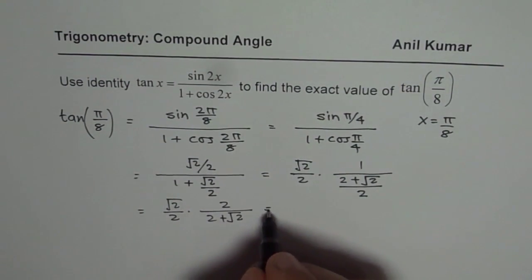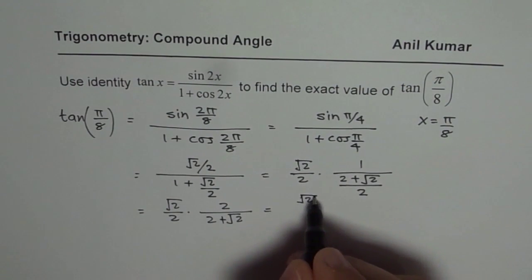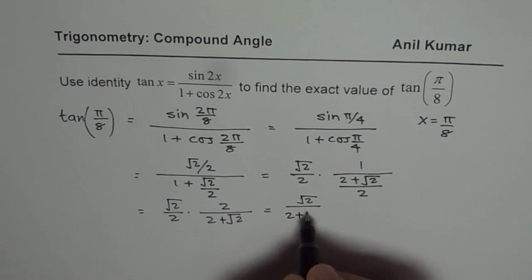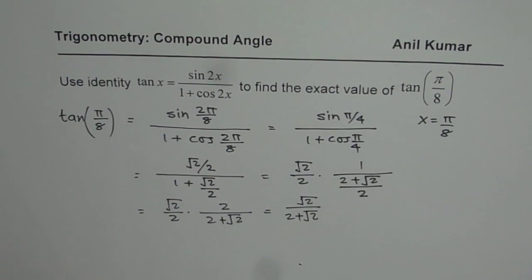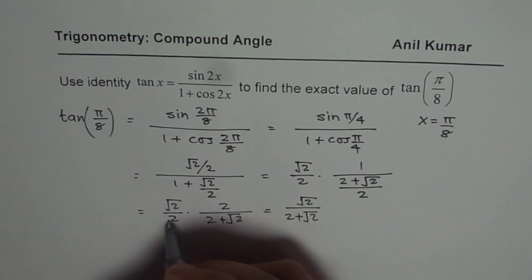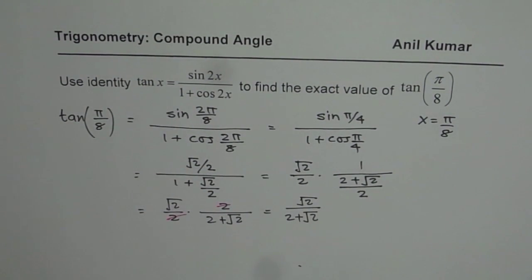2 and 2 cancel. So we get square root 2 over 2 plus square root 2. That could be your solution. Now, most of the time, it is recommended that your solution should not have square root 2 in the denominator.